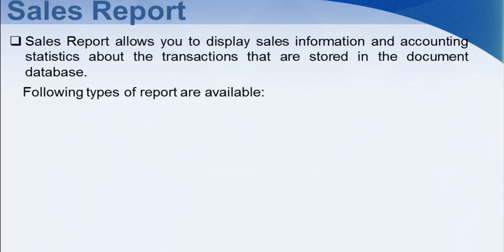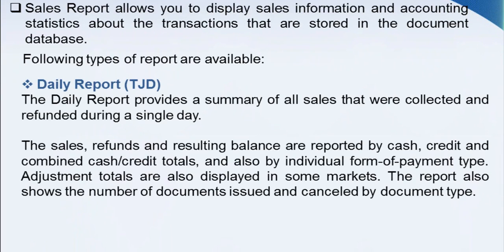The following types of report are available. Daily Report: The Daily Report provides a summary of all sales that were collected and refunded during a single day. The sales, refunds, and resulting balance are reported by cash, credit, and combined cash or credit totals, and also by individual form of payment type. Adjustment totals are also displayed in some markets. The report also shows the number of documents issued and cancelled by document type.